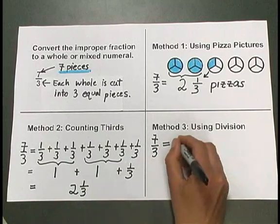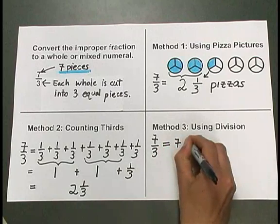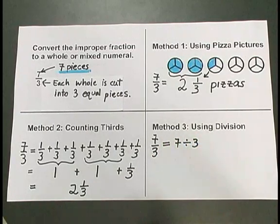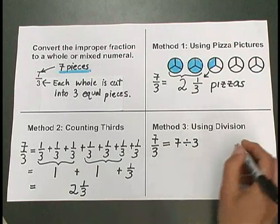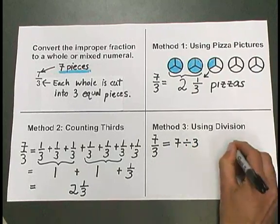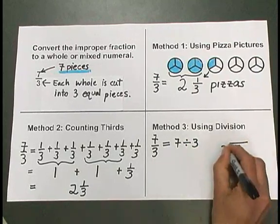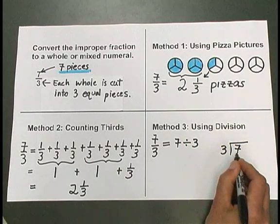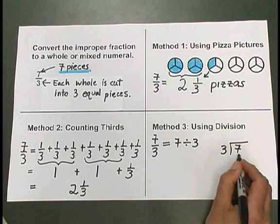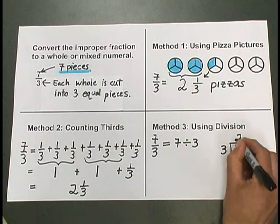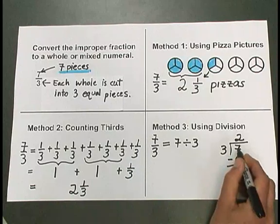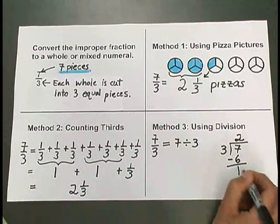7 thirds equals 7 divided by 3. Let's go ahead and do that division. 7 divided by 3 is the same as saying 3 into 7. 3 goes into 7, 2 times, 2 times 3 is 6. I subtract, 7 minus 6 is 1.